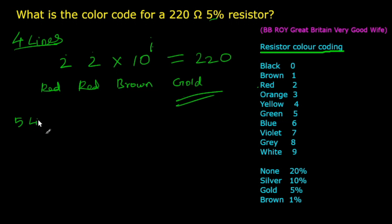The second one is the 5 band method. In the 5 band color code resistors, the first 3 bands indicate the significant digits, the 4th band is the multiplier, and the 5th band represents the tolerance.